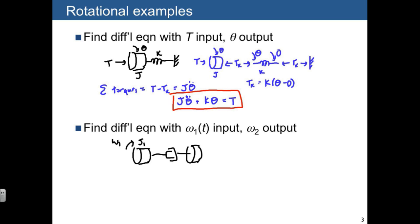And here's mass J2, rotational damping B. And we'll measure the rotation of J2 with this variable omega 2.